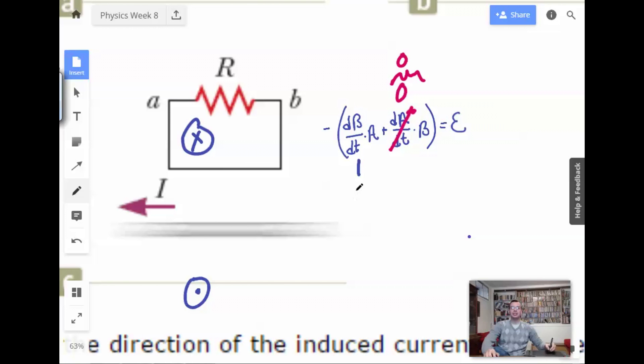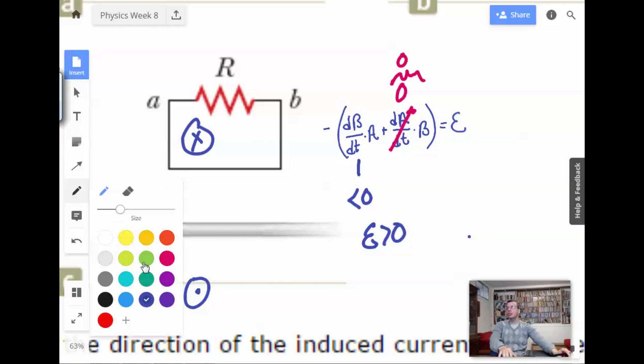And this guy is going to be less than zero. So we have less than zero, less than zero. So we're going to have greater than zero because negative times a negative is a positive. So we have a positive. So we're going to have a magnetic field in the same direction as the magnetic field currently is.